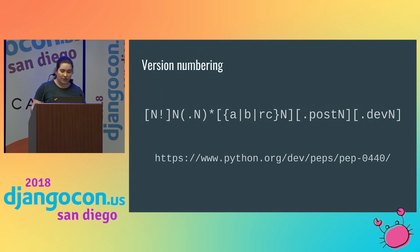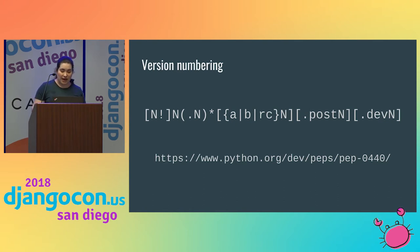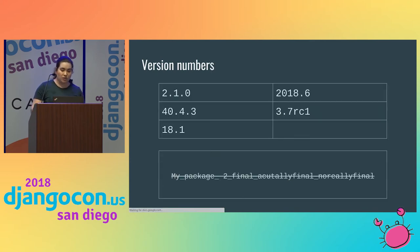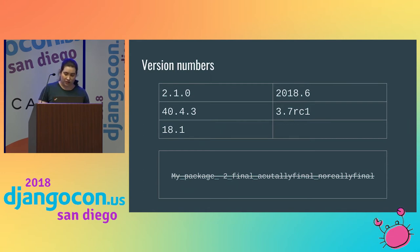Version numbering is also worth consideration. Version numbers are used to differentiate one release from all other releases. They must be unique and must consistently increase. It's a good idea to follow PEP 440 closely. PEP 440 allows for semantic versioning like a.b.c, or year and month type versioning, as long as it conforms to the regex specified in PEP 440.